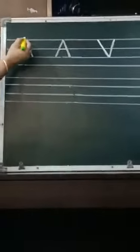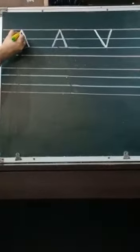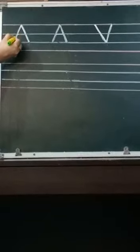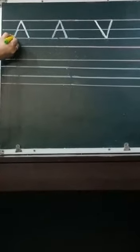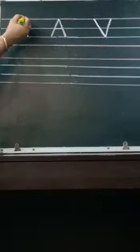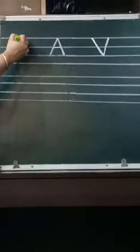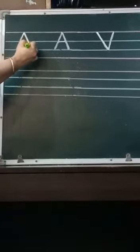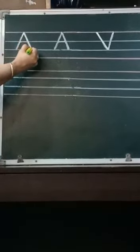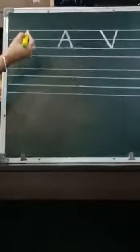Put pencil on the top red line. Make a slant line. Touch the bottom blue line. Stop. Lift your pencil. Again, put pencil on the top red line. Make a slant line. Touch the bottom blue line. Stop. Lift your pencil.